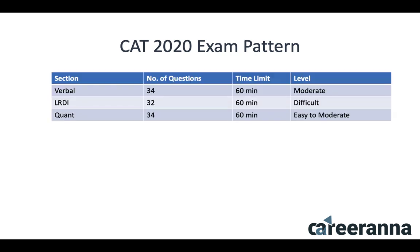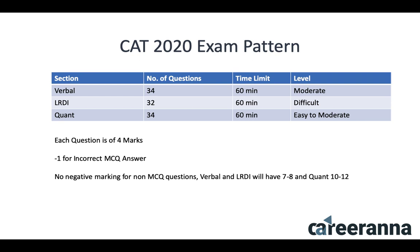Before we get to the topic-wise breakup, let us have a quick look at the expected pattern of CAT 2020. The pattern should more or less remain the same, with a sectional time limit of 60 minutes for all three sections — 34 questions from Verbal, 32 from LRDI, and 34 from QUANT. Overall, over last three years, the difficulty level of Verbal has been moderate, LRDI has been difficult, and QUANT has been easy to moderate on average.